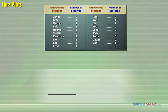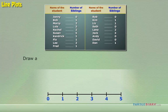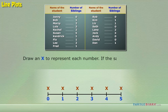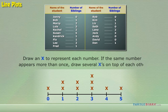To make a line plot, just draw a number line with a range that includes all of the numbers in your data. Then, draw a cross to represent each number. If the same number appears more than once, draw several crosses on top of each other.